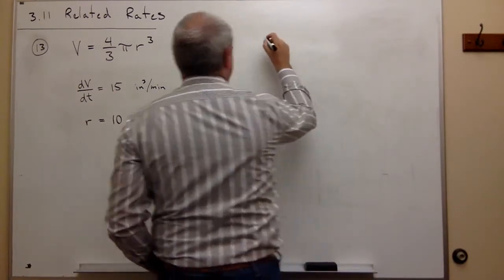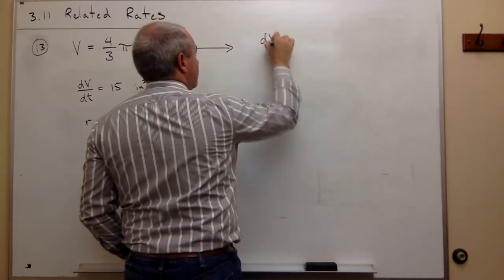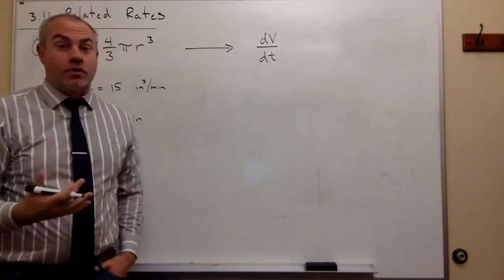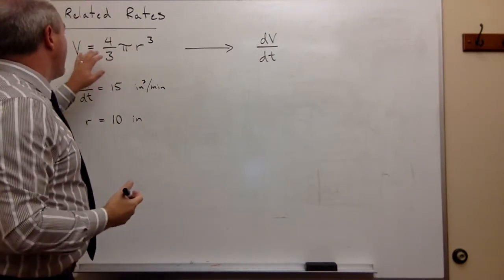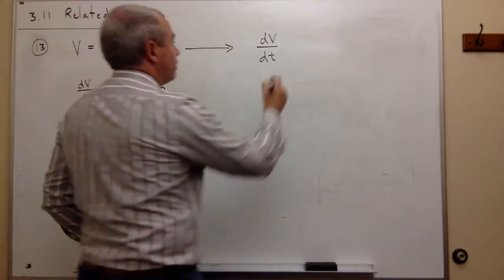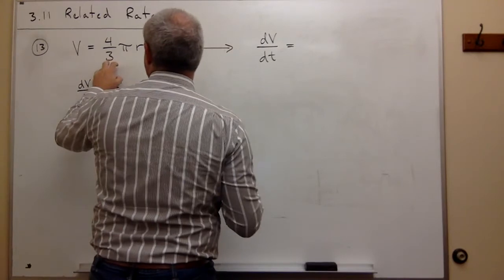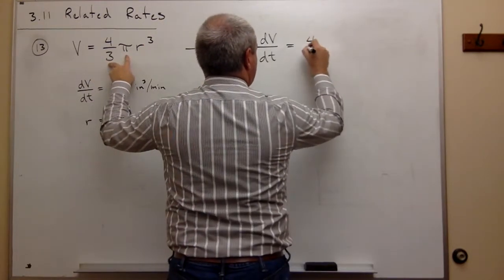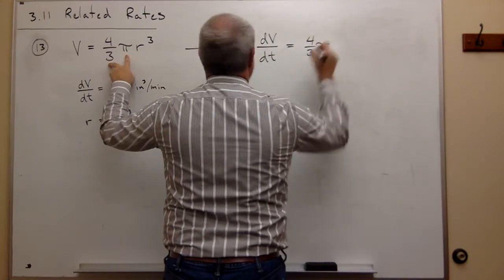First I take the derivative of V, but with respect to the variable t, which is time. So if I take the derivative of V with respect to t, then I get the derivative of V with respect to t, or dV/dt. Then on the other side, this 4/3 π just hangs around because it's a constant.